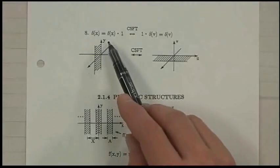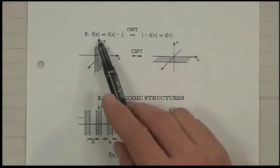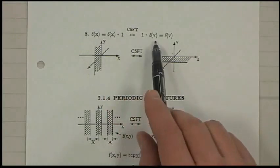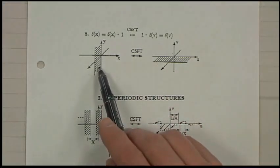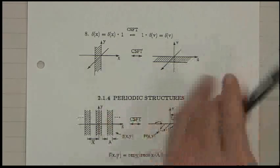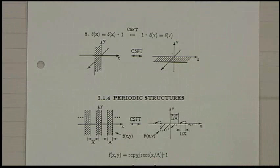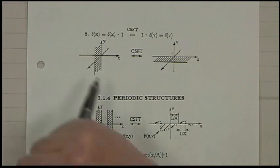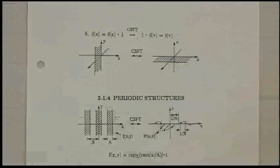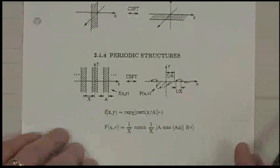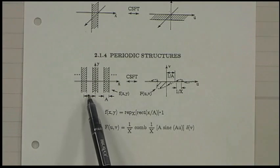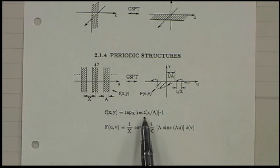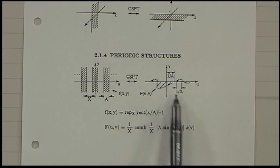If you have delta of x and take its Fourier transform, the delta turns into 1 and the 1 turns into a delta — it flips it. So if you have a knife edge along x in the space domain, when you take the transform it sort of rotates 90 degrees. If you have a periodic structure, it can be represented as a rep of a rectangle. The Fourier transform of a rectangle is a sinc, so you'll get the comb of a sinc.